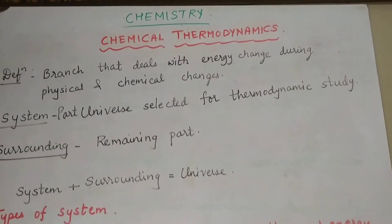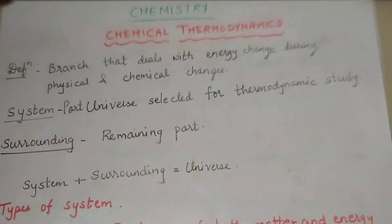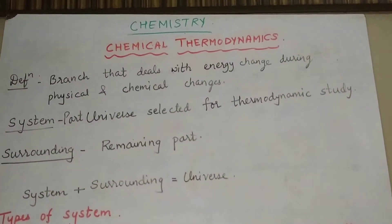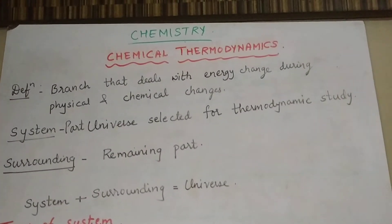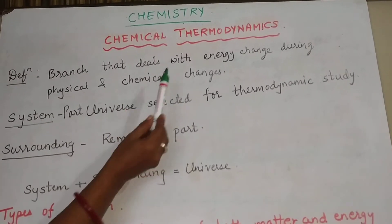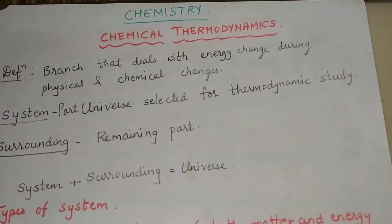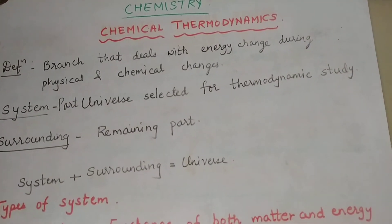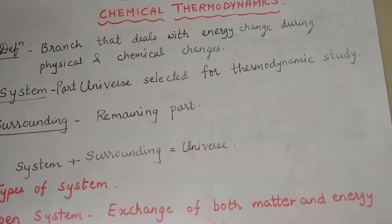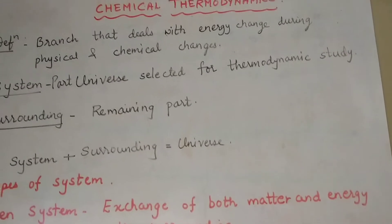We will start with the new chapter named chemical thermodynamics. This is totally a new part coming in 12th standard. To understand what chemical thermodynamics is, you must know the definition of thermodynamics. The word 'therma' indicates heat, and 'dynamics' means change. Thermodynamics is the branch of chemistry that deals with energy changes taking place during physical and chemical changes.